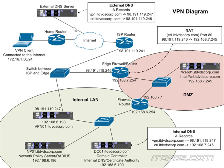With split tunneling, the client would go through its normal internet connection straight to google.com and come back, without using the tunnel. Therefore, the traffic won't pass through our VPN server. This saves on bandwidth and is less taxing on our VPN server. The VPN client will also see a faster response because it's connecting directly to the external website like google.com, rather than routing all the way through our internal network and back out.